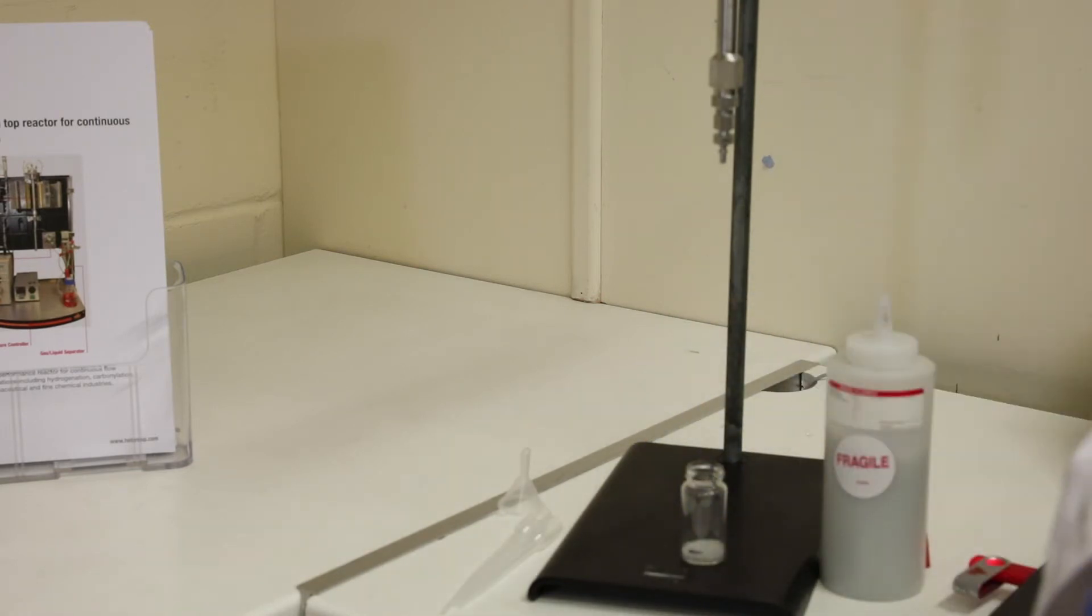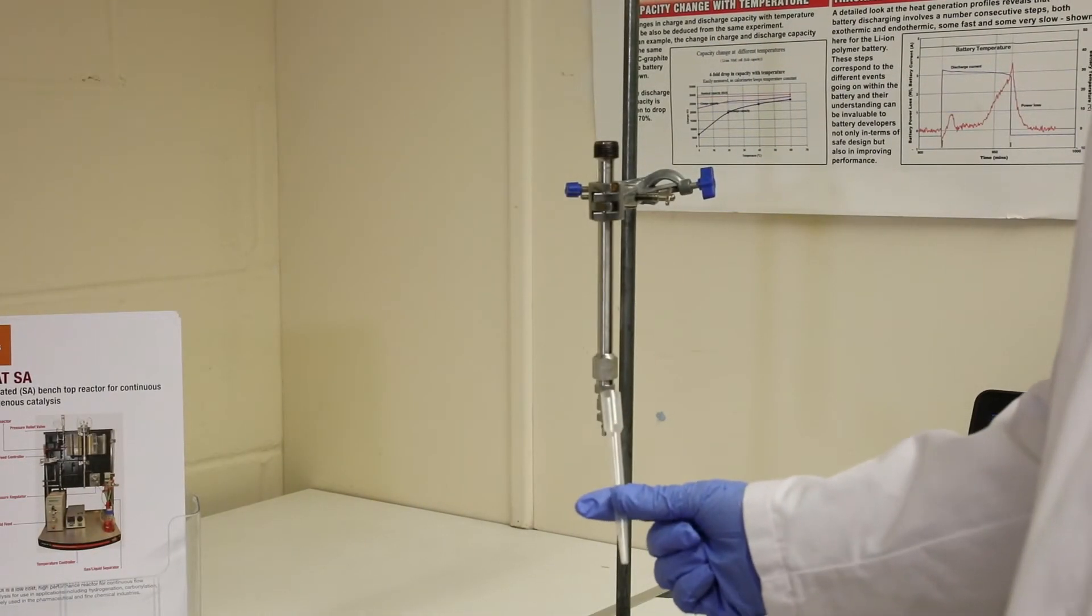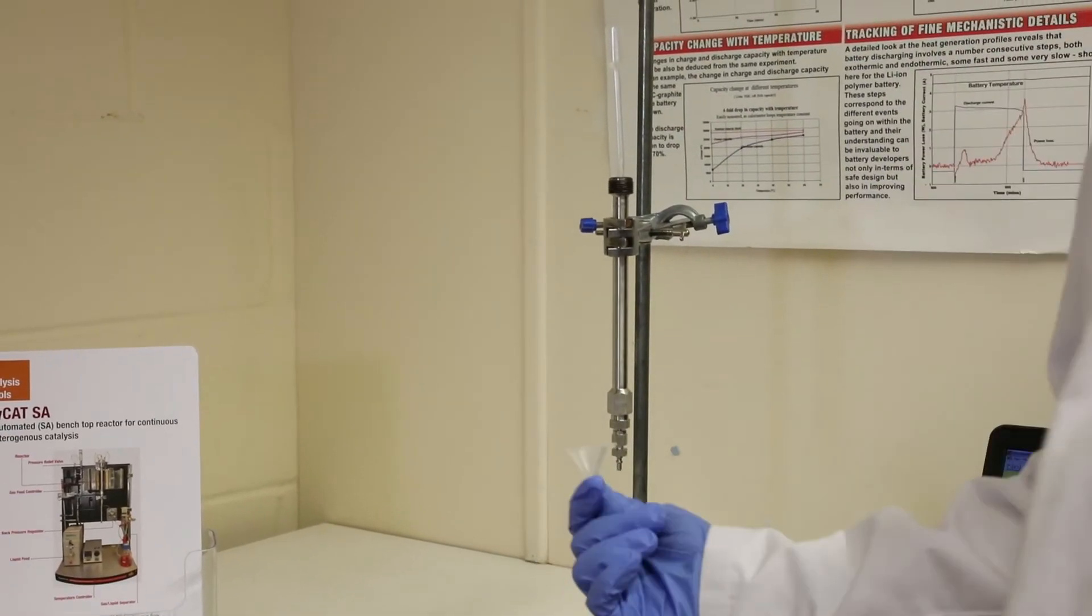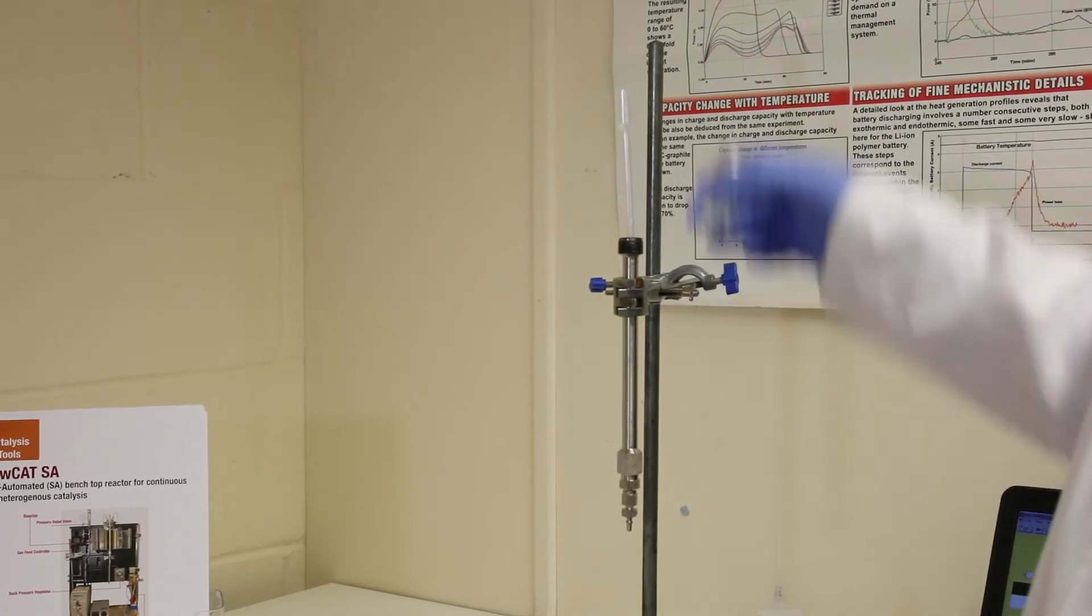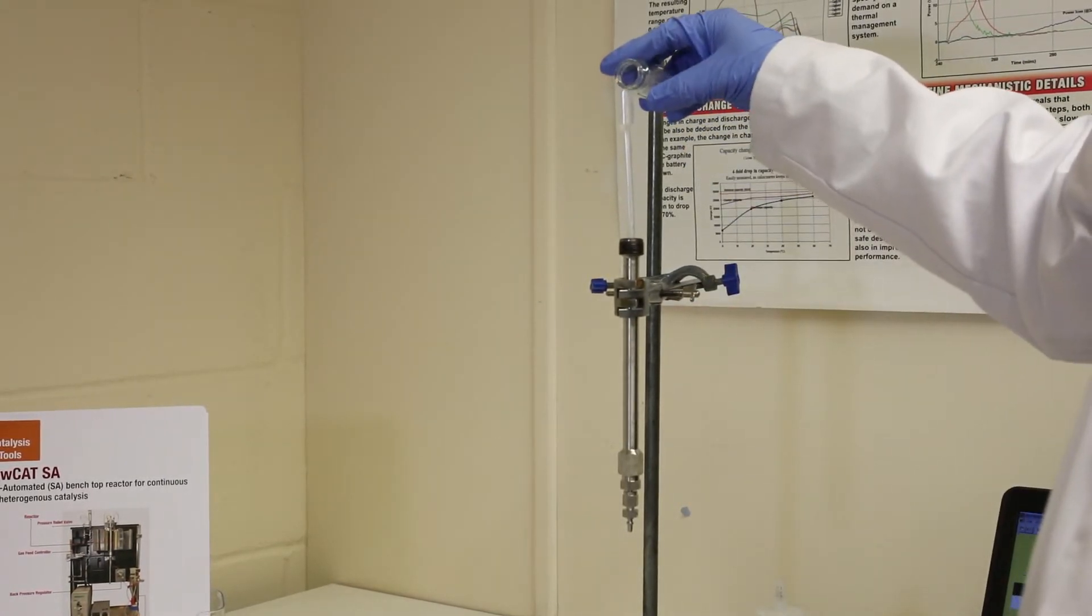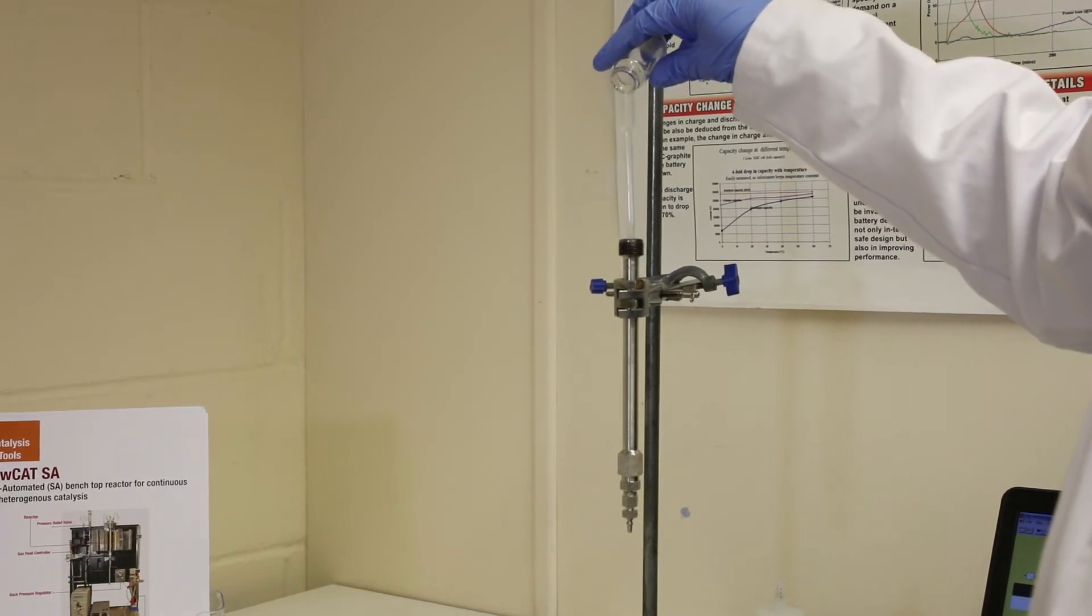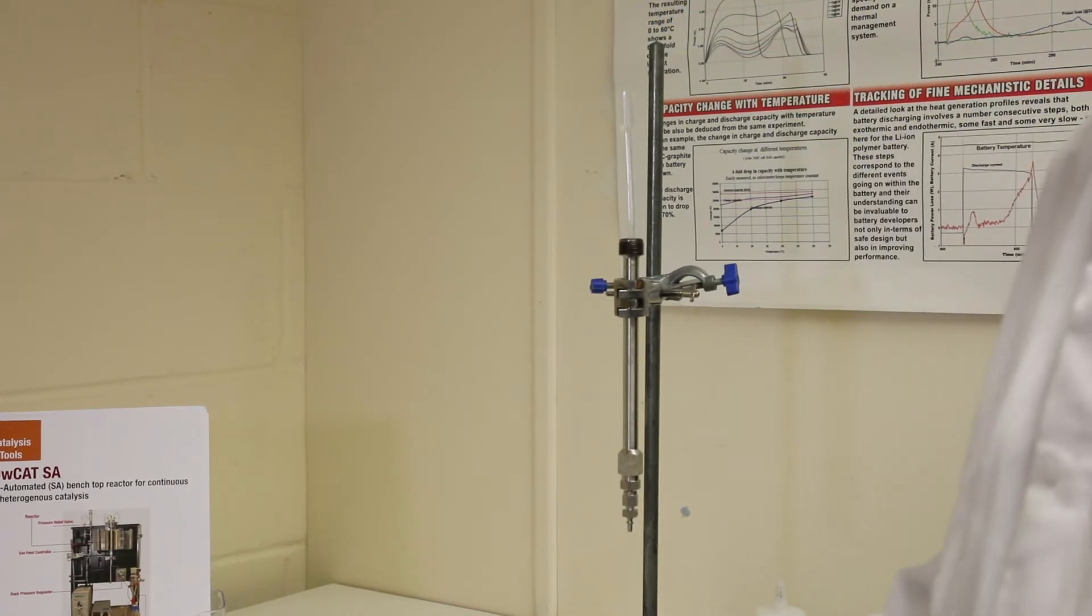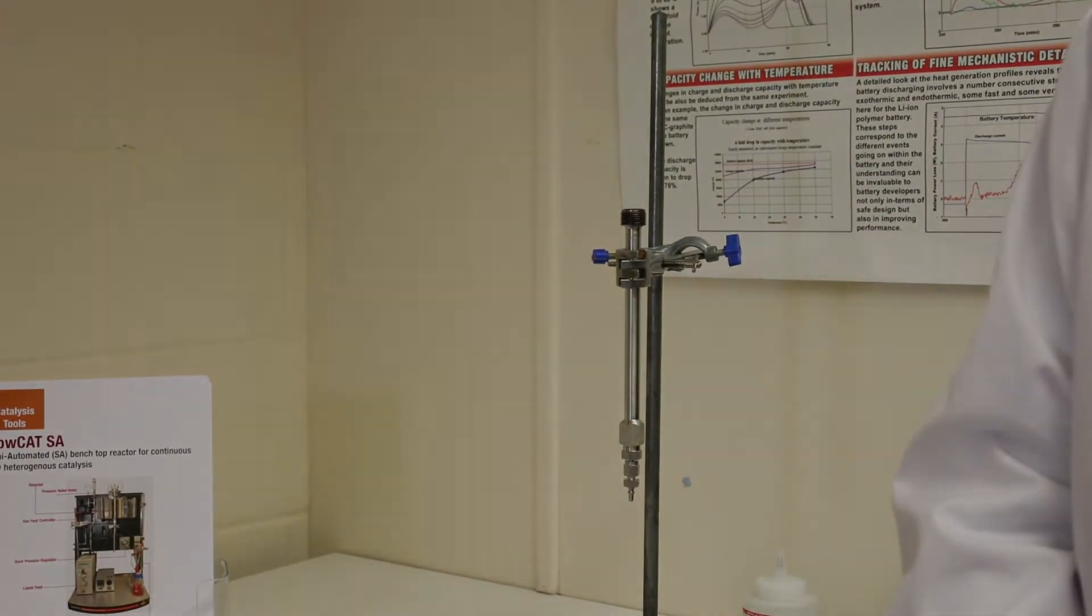Next we want to load it into the reactor. For this, we use a funnel. In this case, I've just trimmed down a plastic pipette because it fits nicely. You can buy small funnels such as this one here. Just have our vial here. If we've mixed that around nicely, we then just literally pour it down the funnel into the reactor. Once that's gone in, we just give it a little tap to level it off, take the funnel out and that's our reactor packed.